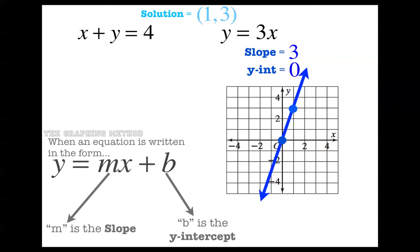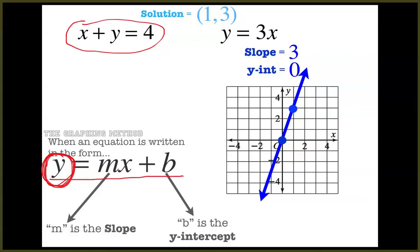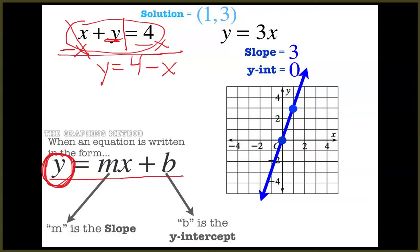Now we're going to do the same thing but with the equation x plus y equals 4. Before we can graph this equation, we have to put it in y equals mx plus b form, meaning we have to get y by itself. To get y by itself, I've got to get rid of that x — I'm going to do x minus x so those cancel out. Of course, I can't take x away from the left side without taking it from the right side too. So now I have y equals 4 minus x, or y equals negative x plus 4.